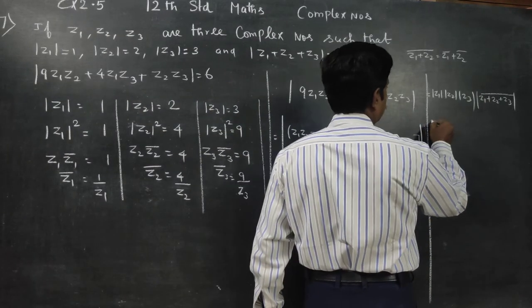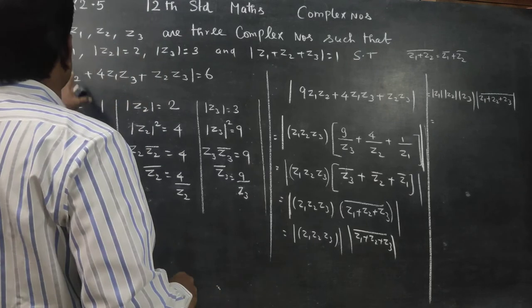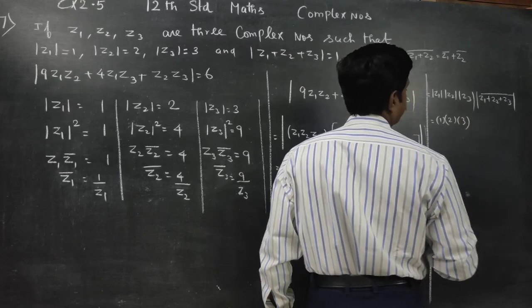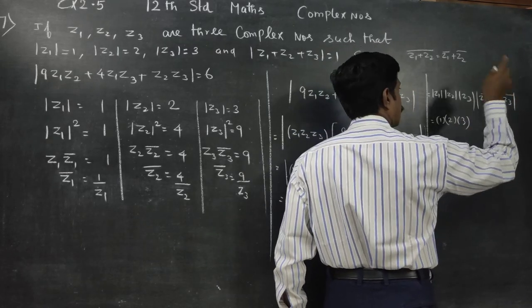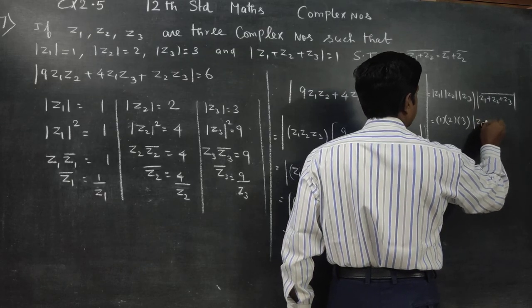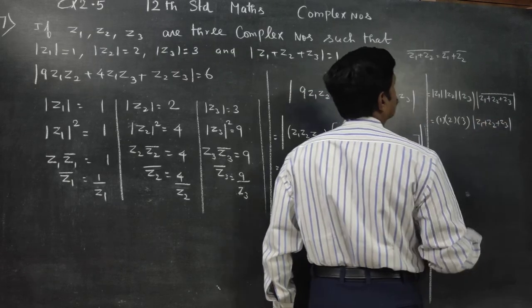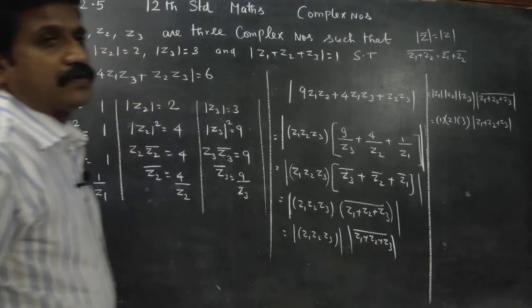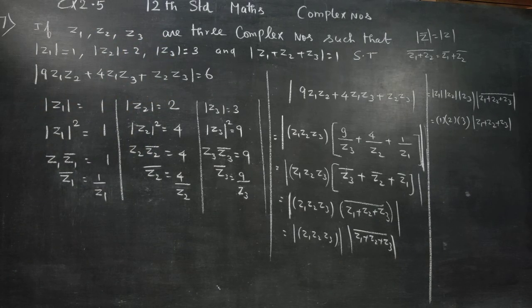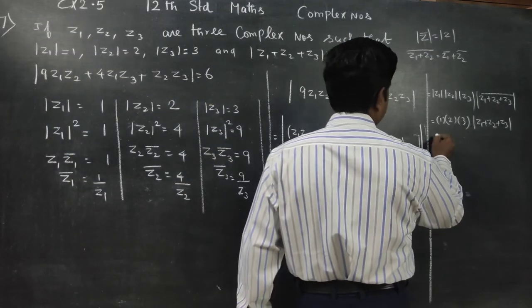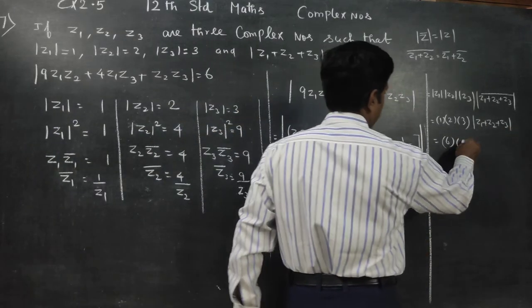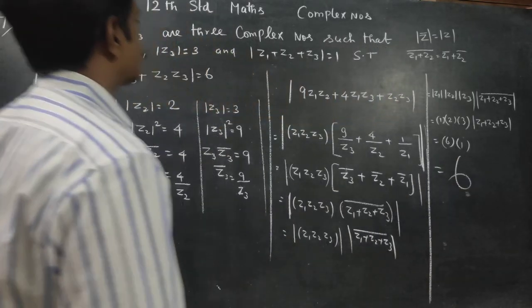Substituting the known values: modulus of z1 is 1, modulus of z2 is 2, modulus of z3 is 3, and modulus of z1 plus z2 plus z3 is 1. Therefore, 1 into 2 into 3 is 6, and 6 into 1 is 6. The answer is 6 — hence proved. Thank you.